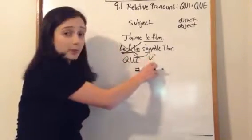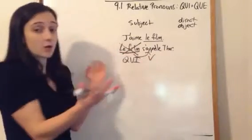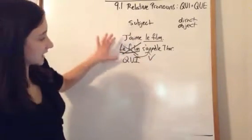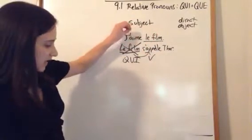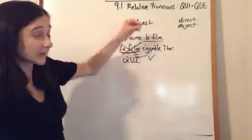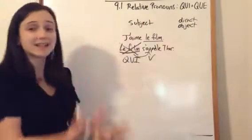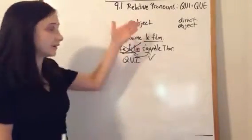So, qui is followed by a verb. That's all we do. We have two different ideas, or two different sentences. They have a similar theme here. We're talking about that related idea of the movie, and we're just linking them together. The related relative pronoun.